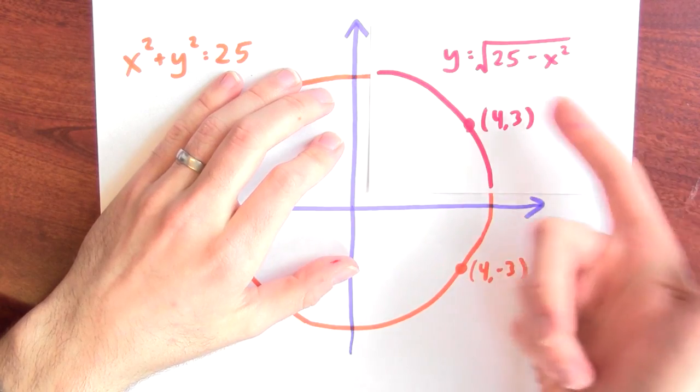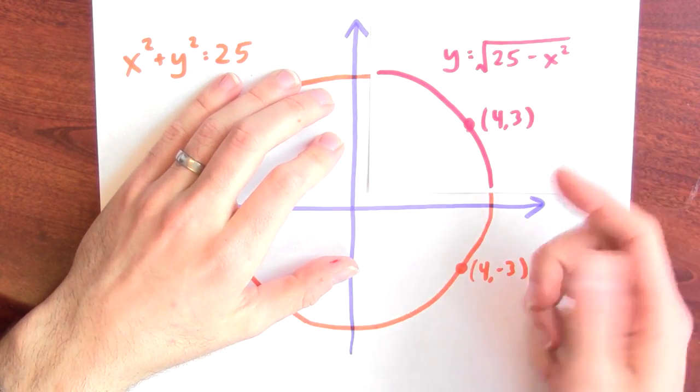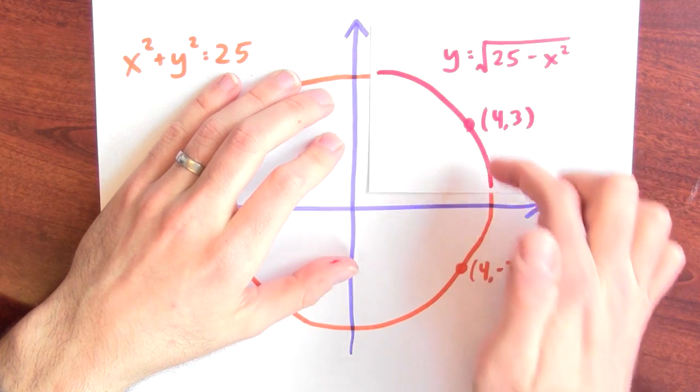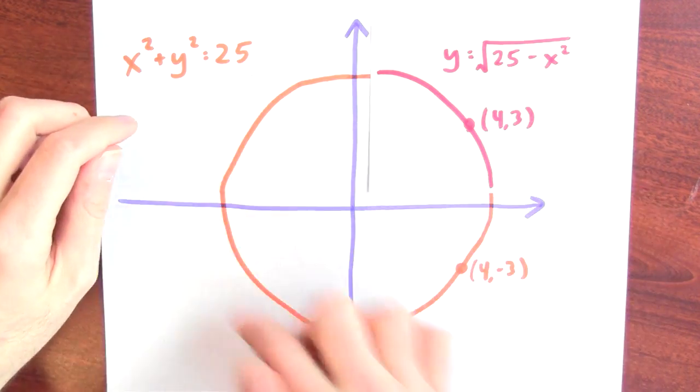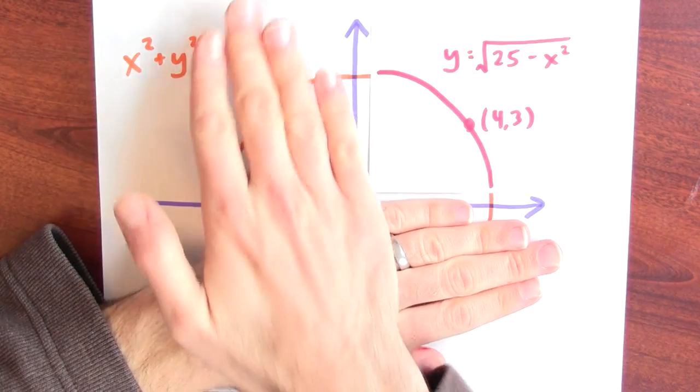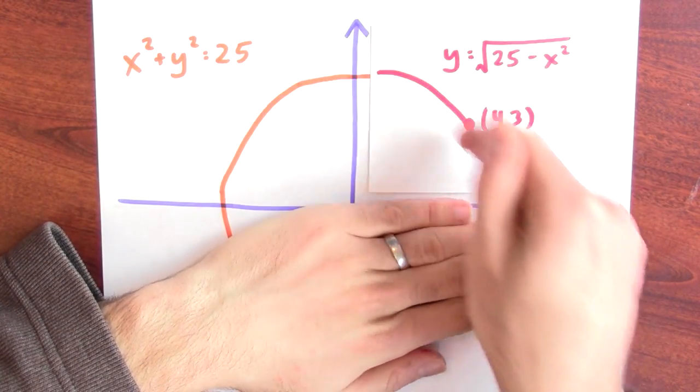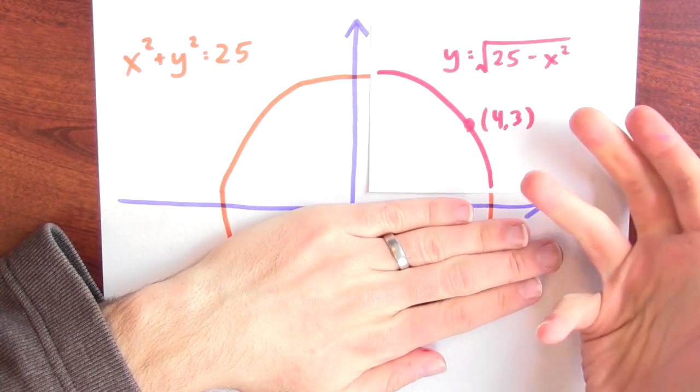y equals the square root of 25 minus x squared, which traces out a piece of the whole curve. I'm just ignoring the rest of this, and this little tiny piece of the curve can be regarded as a function.